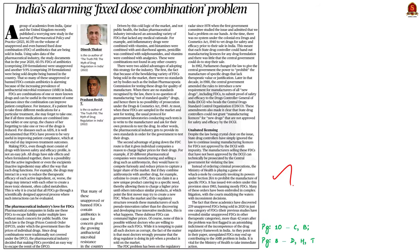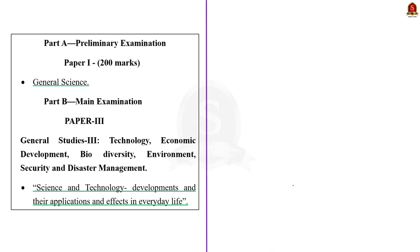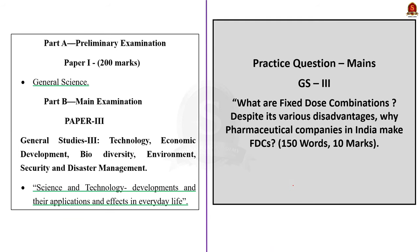Look at this editorial article. It talks about India's alarming fixed dose combination problem plaguing our health sector, discussing FDC issues and why pharma companies are opting for the process. In our discussion today, we will answer a mains question: 'What are fixed dose combinations? Despite its various disadvantages, why do pharmaceutical companies in India make fixed dose combinations?' This question falls under GS Paper 3, under the syllabus of science and technology developments, their applications, and effects in everyday life.